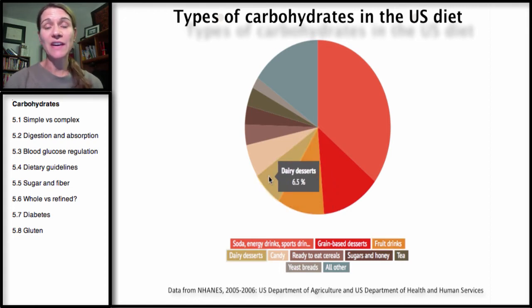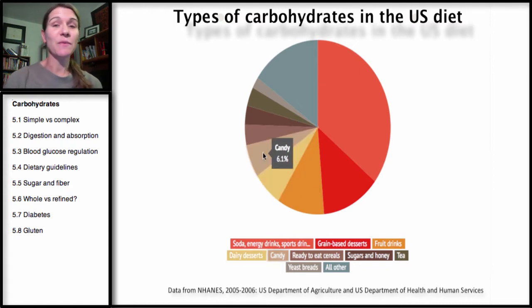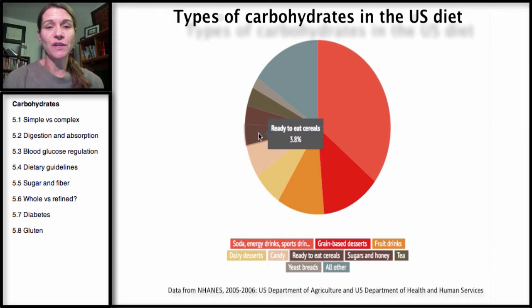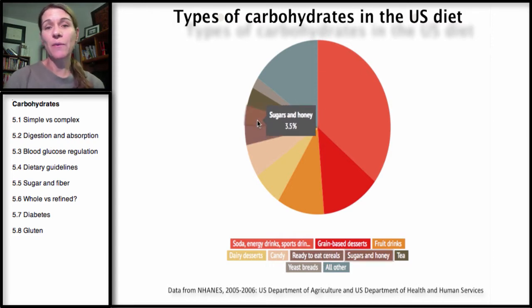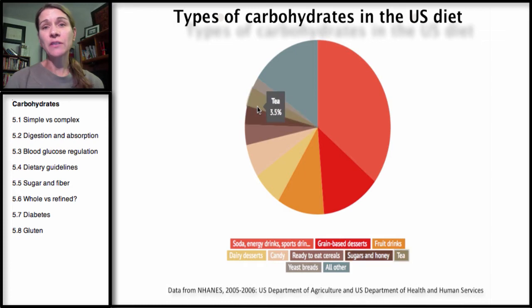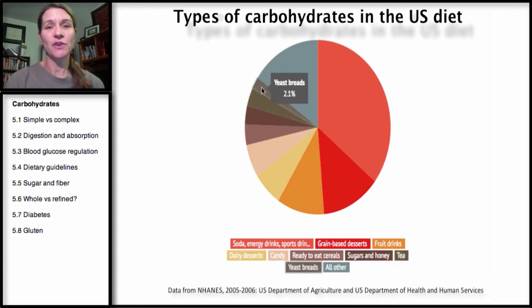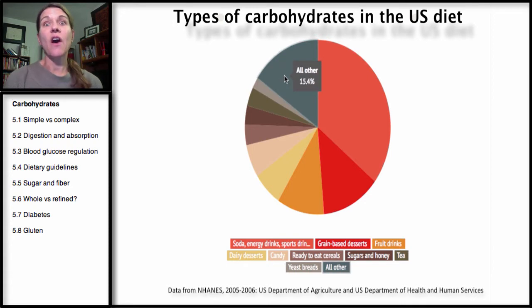After that is dairy desserts, frozen yogurts, and ice cream. And then we have regular candy, off-the-shelf candy, and ready-to-eat cereals. And then the sugar that we add to foods, such as sugars and honeys — this isn't in processed foods. The next one is tea, which makes up 3.5%, but this is teas with added sugar. And then breads, which usually have added sugar. And then all other.